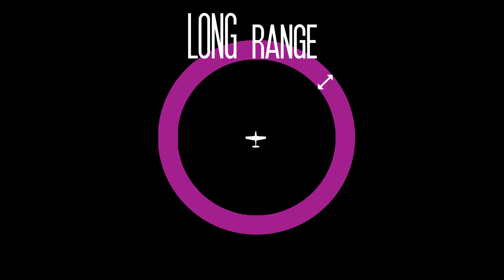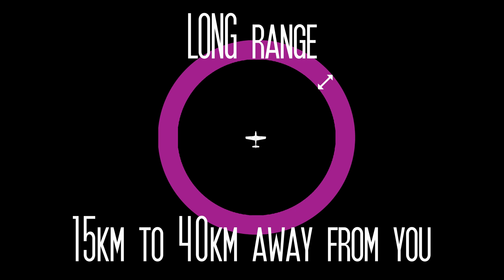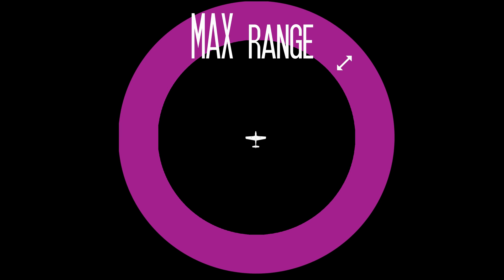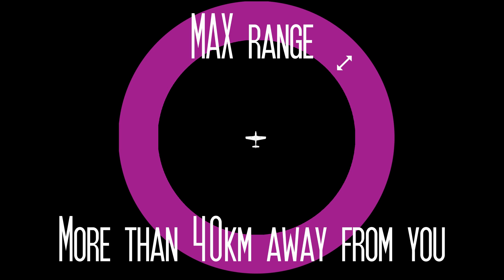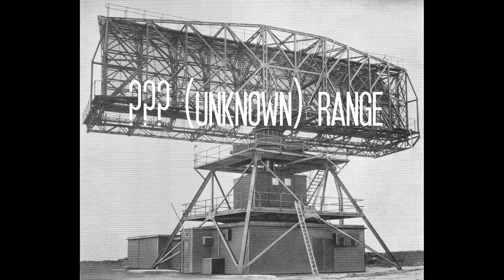The next category is long. These are contacts which are potentially about to become threats, but depending on their heading they are probably well away from you — between 15 and 40 kilometers away. The final category is max: contacts which are above 40 kilometers from you, or about 30 to 35 miles. These are well outside of engagement range and represent little to no threat to the player. If the range returns as unknown, that just means the radar station is having some problems ranging that contact, due to terrain, attenuation, or some other factor.